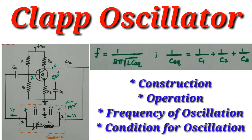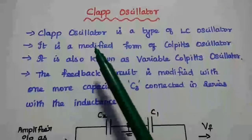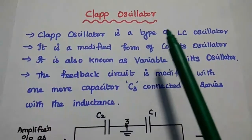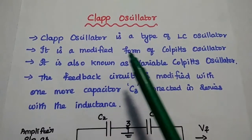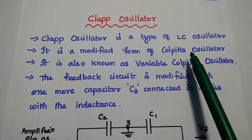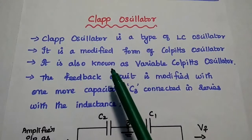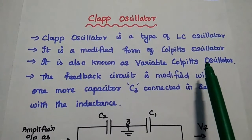We are going to discuss the CLAP oscillator and its derivation in detail. The CLAP oscillator is a type of LC oscillator. It is a modified form of the Colpitts oscillator, and hence it is also known as the variable Colpitts oscillator.